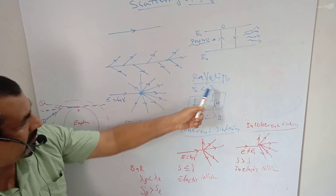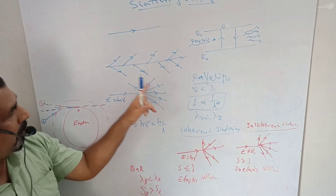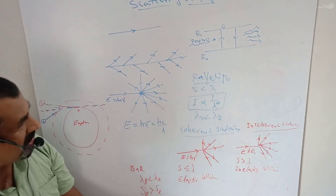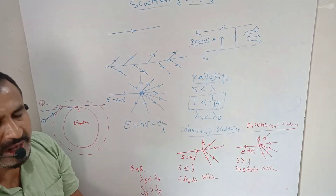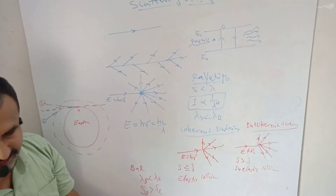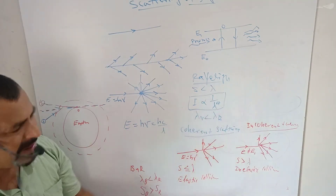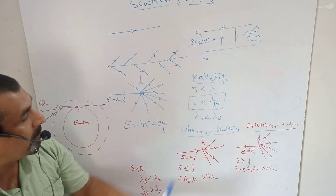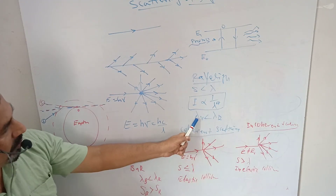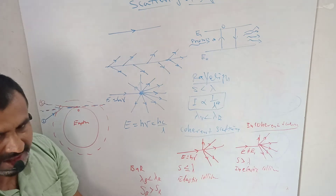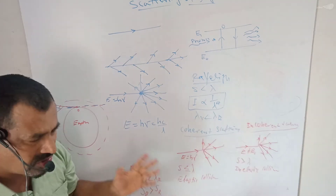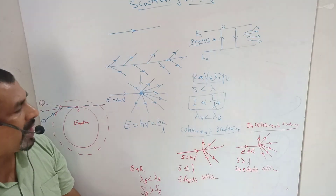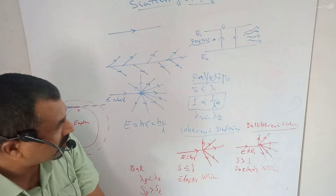Since intensity of scattered light is inversely proportional to the fourth power of wavelength, and since the wavelength of violet is less than the wavelength of red, violet color is the most scattered, while red is the least scattered light. There are two types of scattering: one is coherent scattering and one is incoherent scattering.